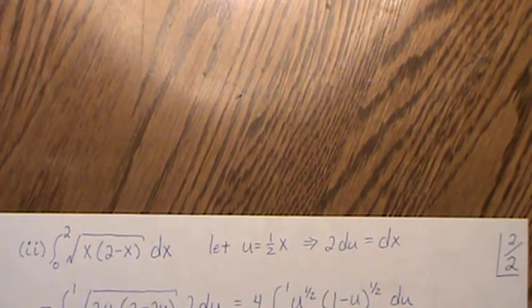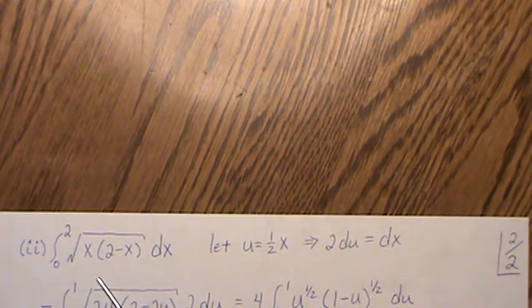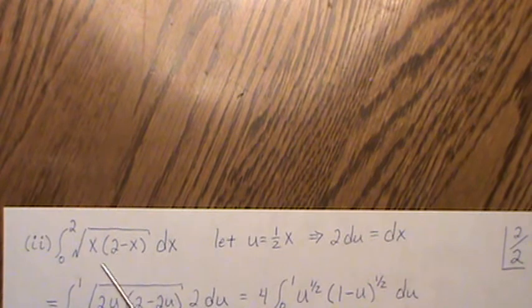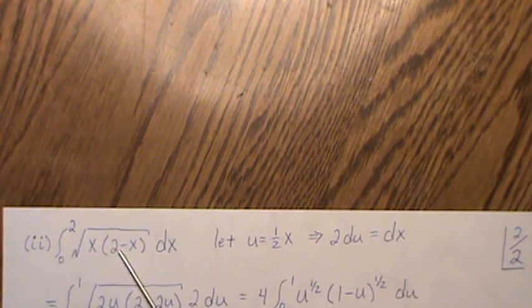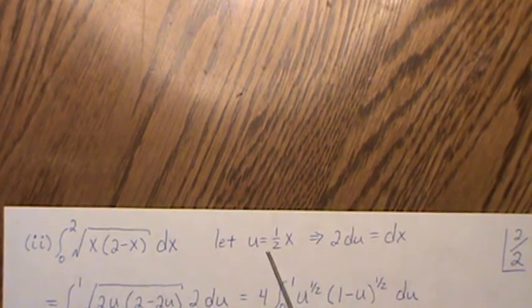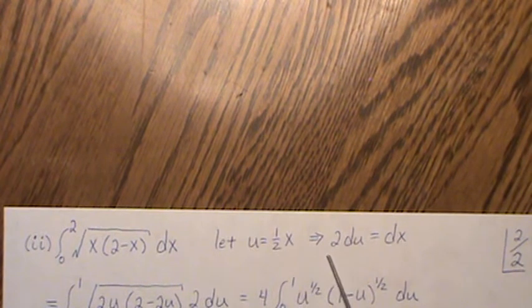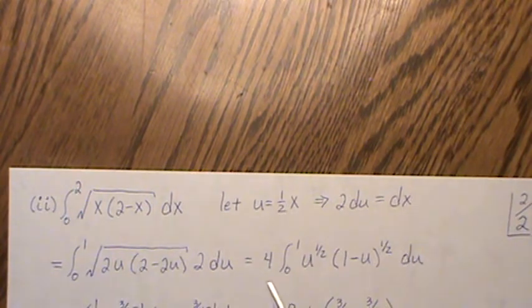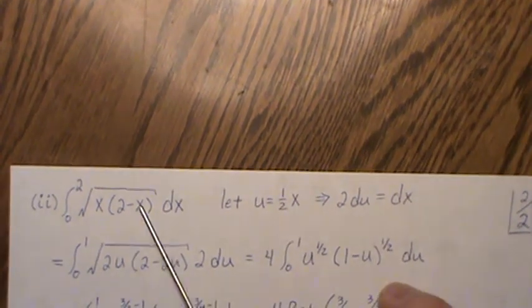Now the second integral is this, and to me this is already sort of a little bit like the beta. So if we let u equal 1/2 x and then 2du equals dx, and substitute in.